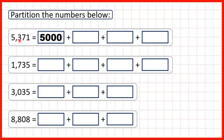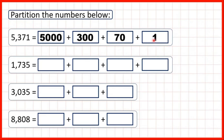This three is in our hundreds, so that represents three hundred — three followed by two zeros, because we have two digits after the three. This seven in our tens stands for seventy, and this one in our ones just stands for one. So if we add five thousand, three hundred, seventy, and one, we get five thousand three hundred and seventy-one.